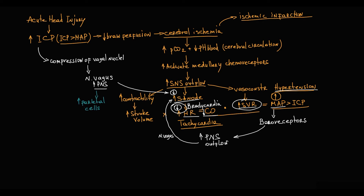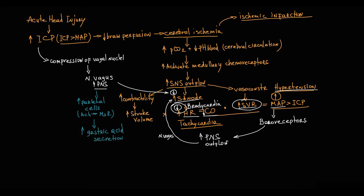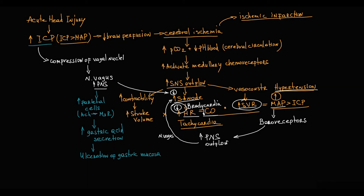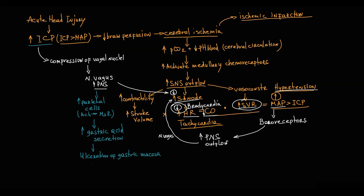It is also high-yield to know that compression of the vagal nuclei, through the vagus nerve, increases parasympathetic outflow to parietal cells in the gastric mucosa. Acetylcholine stimulates M3 receptors on parietal cells, resulting in increased gastric acid secretion. Prolonged excessive gastric acid secretion eventually results in ulceration of the gastric mucosa, and ulcers that develop due to increased intracranial pressure are called Cushing ulcers.